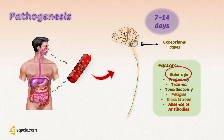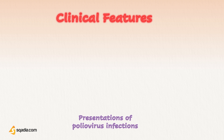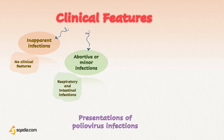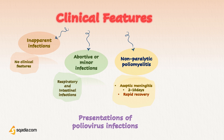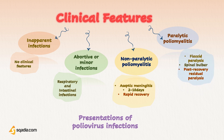The most striking factor is the influence of age — if a non-immune adult is affected, the resulting paralysis will be very severe. Infection with poliovirus may present in four types: inapparent infection with no clinical features; abortive or minor infection with symptoms of respiratory or intestinal infection; non-paralytic poliomyelitis similar to aseptic meningitis, lasting 2 to 10 days with rapid recovery; and paralytic poliomyelitis characterized by flaccid paralysis — spinal, bulbar, and post-recovery residual paralysis. Inapparent infection is the highest, at 90 to 95 percent, whereas paralytic poliomyelitis occurs in only 0.1 to 2 percent of cases.